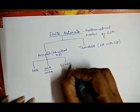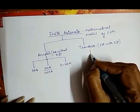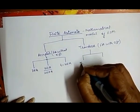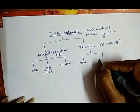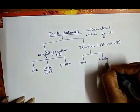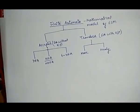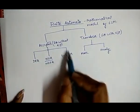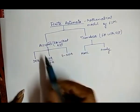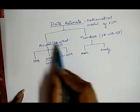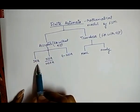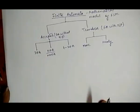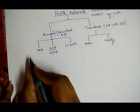The transducer is of two types: one is the Mealy machine and the other is the Moore machine. However, in the subject of compiler design, we only need to study the acceptor technique, which consists of DFA, NFA, and epsilon-NFA.